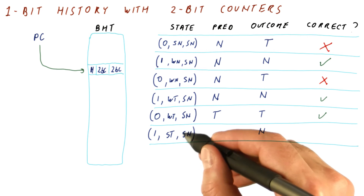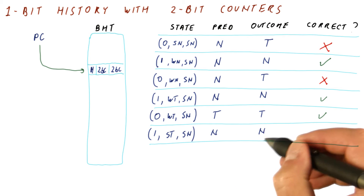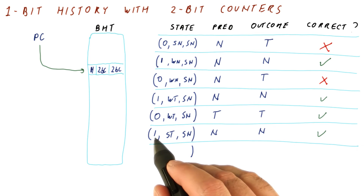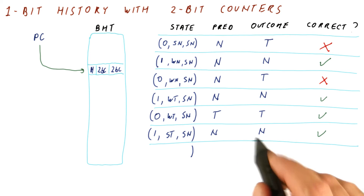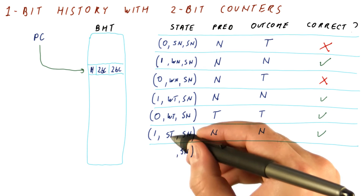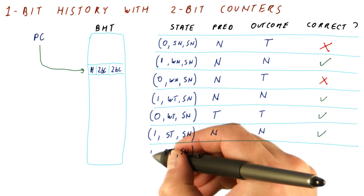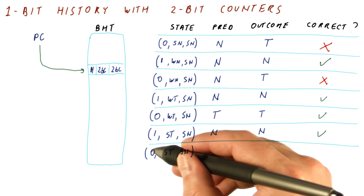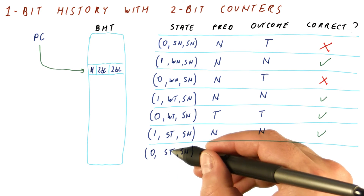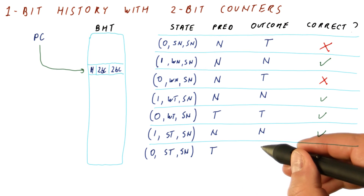One means we use this counter next. It says not taken. We predict not taken, and we are right. Update the state of the predictor: one means we update this one with not taken. It stays strongly not taken. This one stays the same. History shifts in a zero, so it becomes zero. We use zero to tell us which counter — this one is strong taken, so we predict taken, and we will be right.